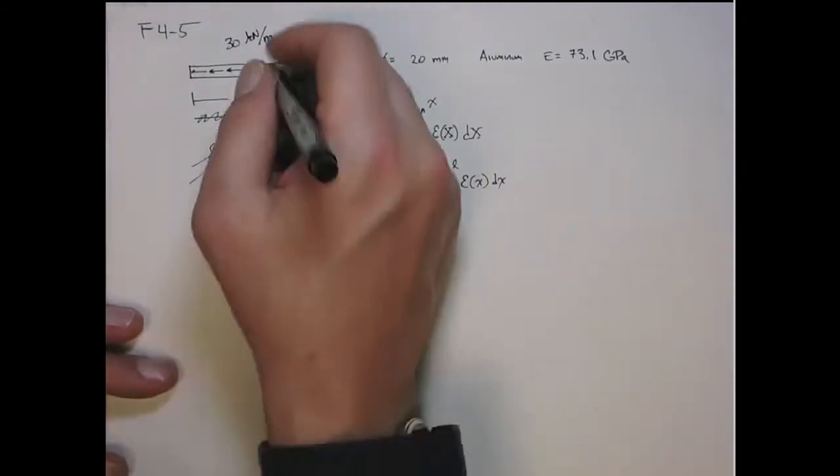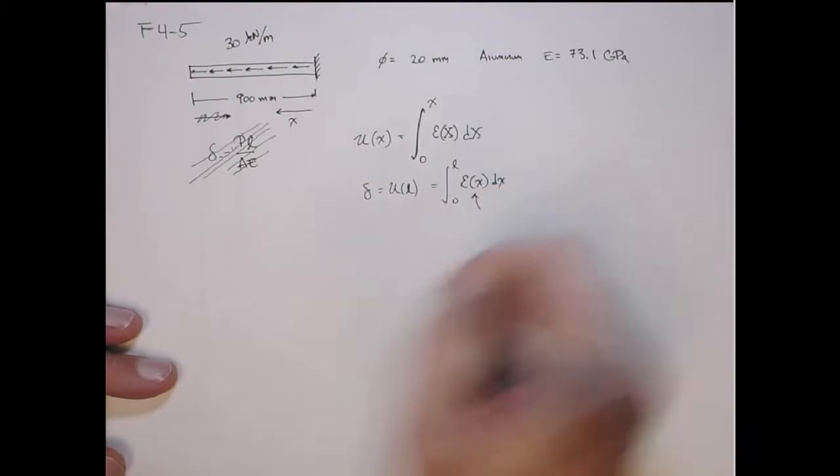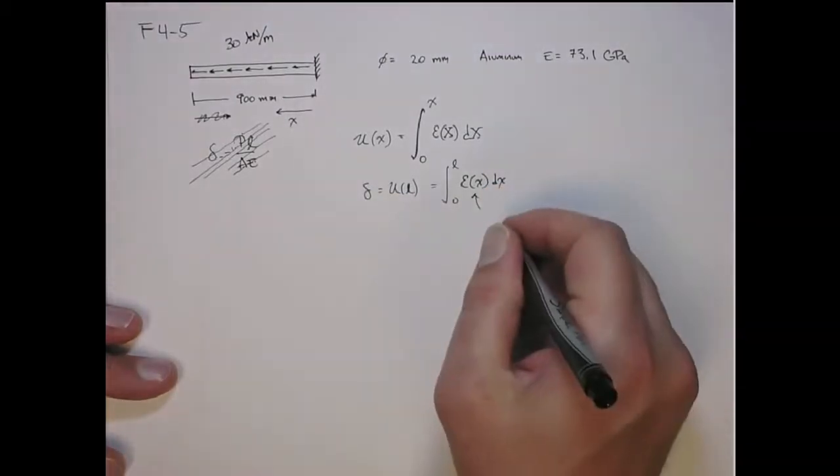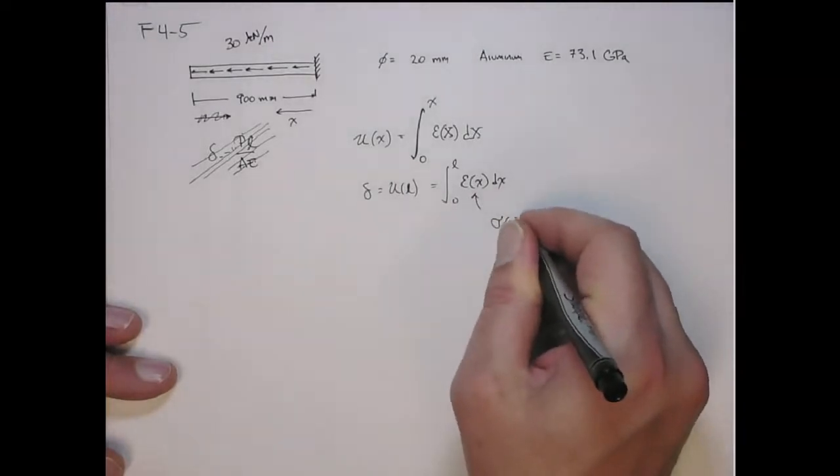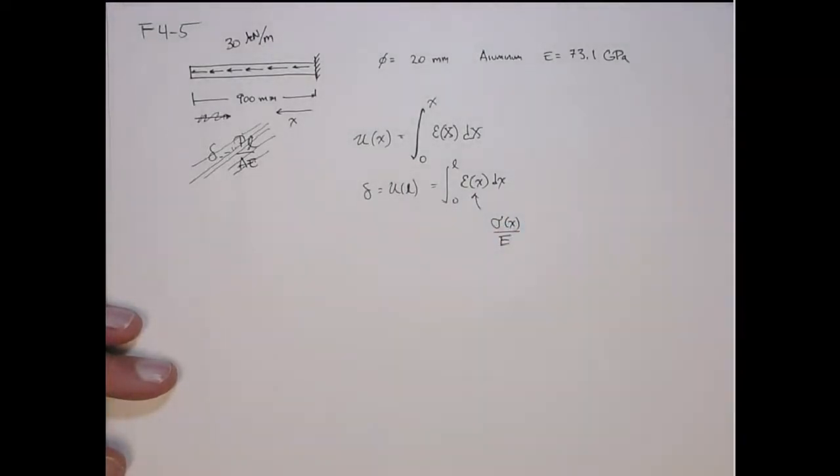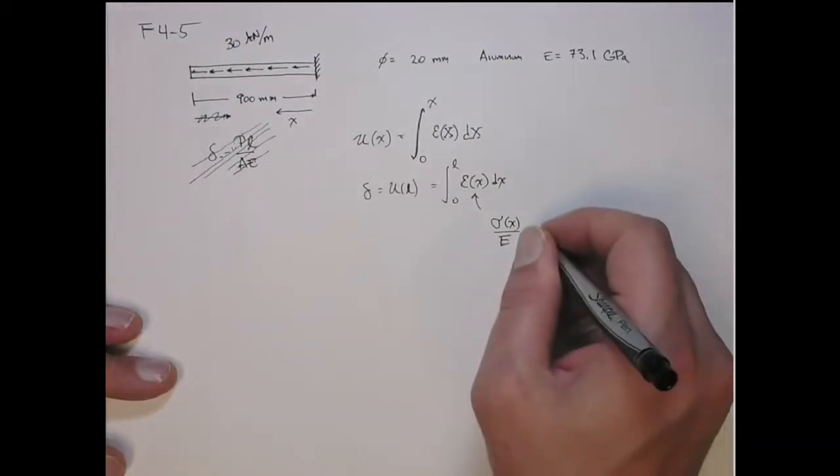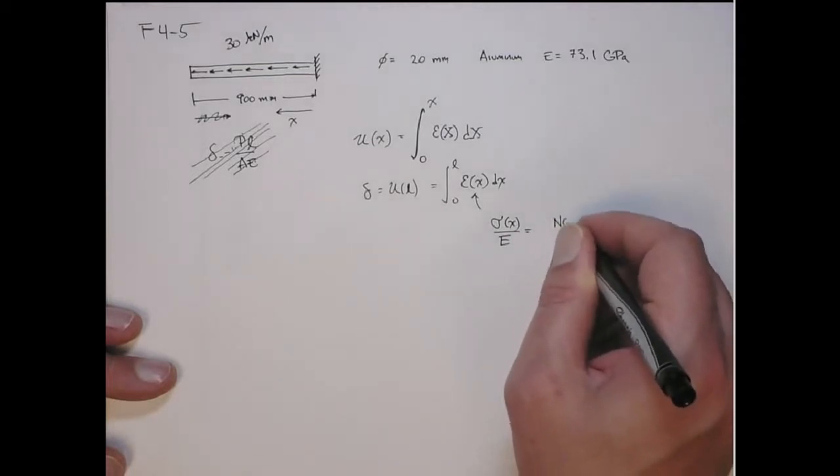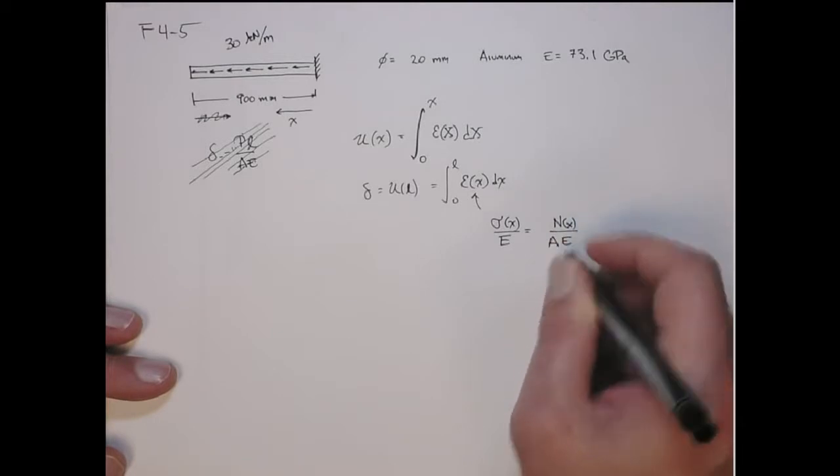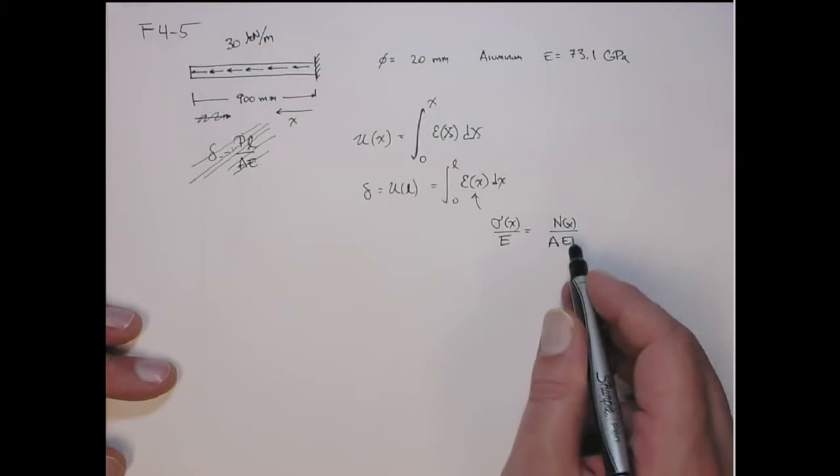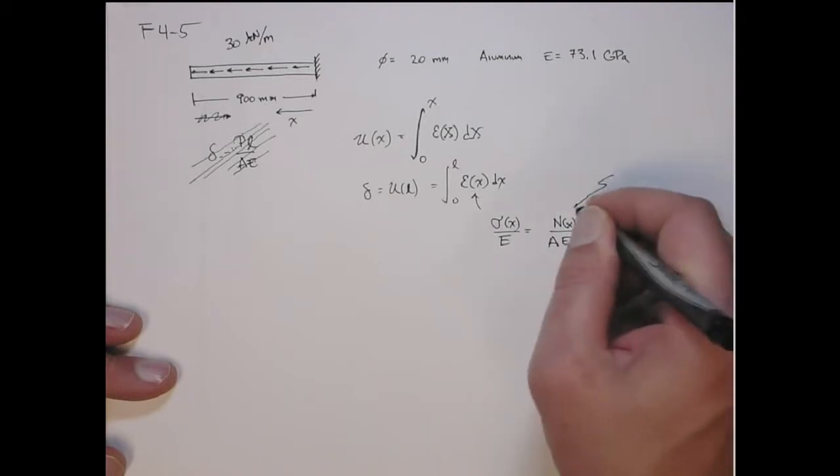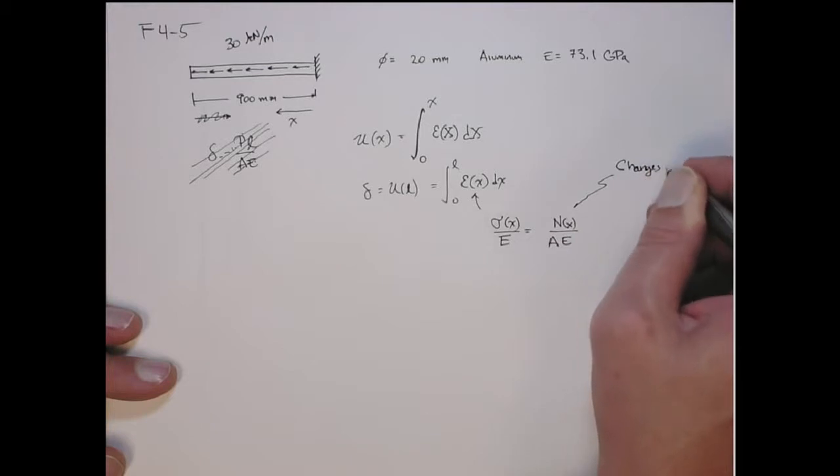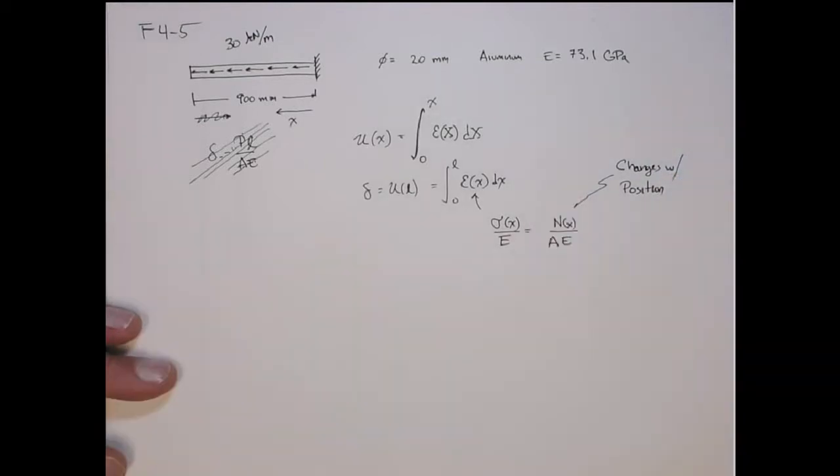So what's the free body diagram? The strain is the stress over Young's modulus. Young's modulus is constant. And then we can define the stress as the internal reaction force over the cross-sectional area, which is also constant. So A is constant in this problem. But this is what varies - that's what changes with position. That's why we have to do the integral. We need to get that. How do we figure that out?